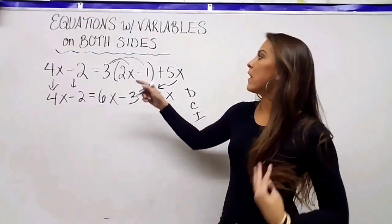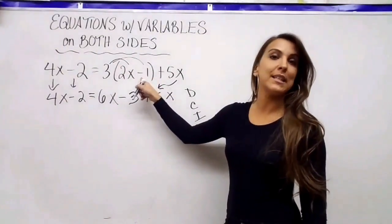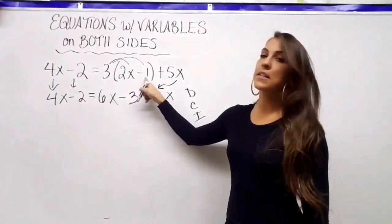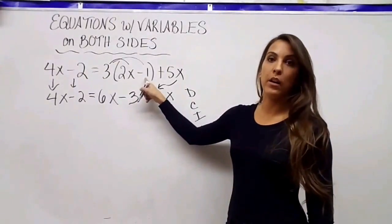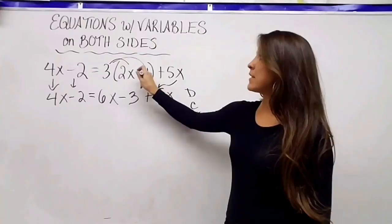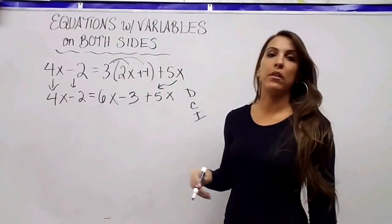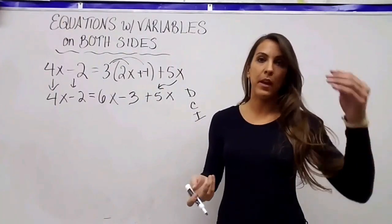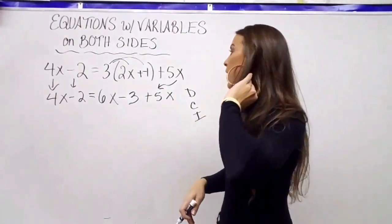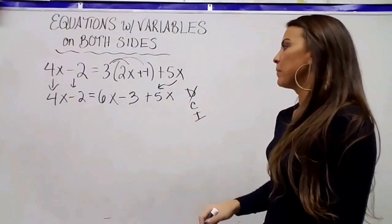I get the question a lot: is it a minus or a negative? It's the same thing — you can look at it as minus 1, but using keep-change-change it's the same as plus negative 1. Minus and plus negative are the same thing, however you like to look at it. So I've distributed and my parentheses are gone.